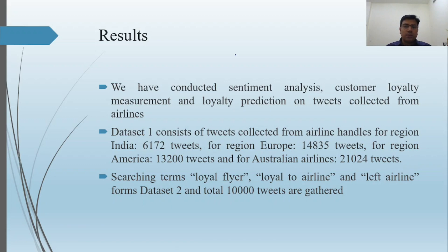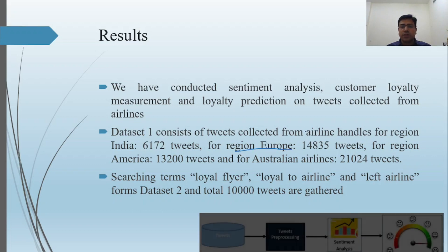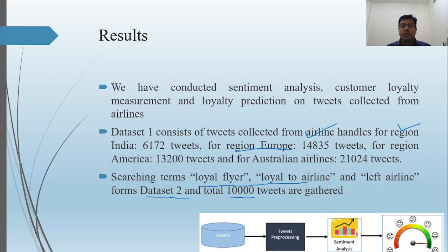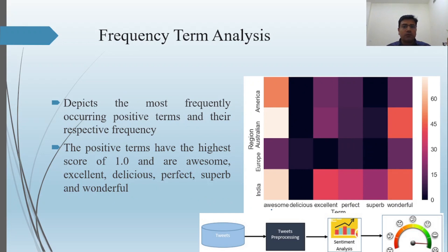Here is the overall result of our experiments. The first dataset consists of four regions: Indian region has around 6,000 tweets, European region has around 14,000 tweets, American region has around 13,200, and Australian region has around 21,000. This was collected to analyze the tweet sentiment. The second dataset consists of 10,000 tweets collected with specific query strings such as 'loyal flyer', 'loyal to airline', and 'left airline'. We also analyzed the most frequent terms present across different airline regions.